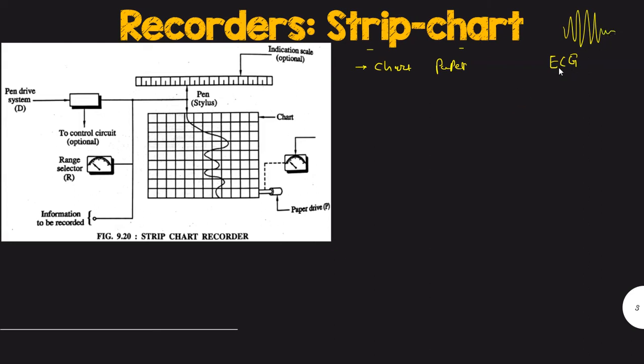So it is a kind of strip chart recorder. The recorder records the variation of one or more variable. Strip chart recorder will record the variation of variables which can be one or more on the movable paper by using a stylus or you can say a pen.